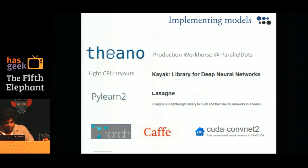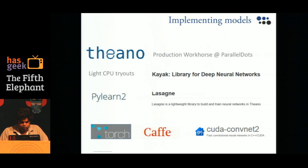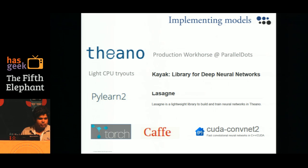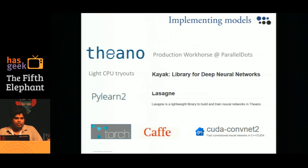For implementation, we use Theano, a Python library where you can write neural networks in almost NumPy-like syntax. It compiles to CUDA code — essentially C for GPUs — and can run on all NVIDIA GPUs. For quickly trying out algorithms we use a library called Kayak, which is very NumPy-friendly and runs on CPUs. There are other libraries like PyLearn2 and Lasagna, which are to Theano what SciPy is to NumPy.